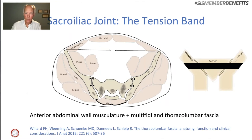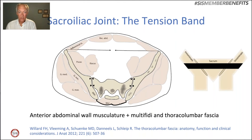What is that tension band? It's the abdominal wall musculature in front, passing through the bones of the iliac wings. Posteriorly, it's the multifidus musculature and the thoracolumbar fascia. This emphasizes that when we want a healthy sacroiliac joint, it's not the bony construct but the tension band that gives it support.